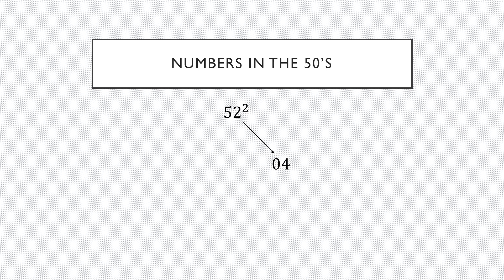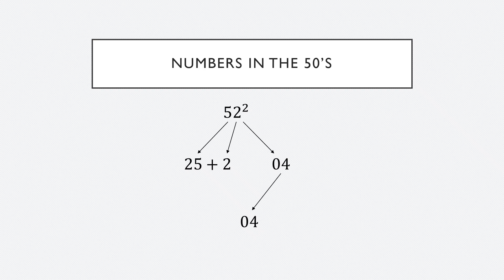Now, take the first digit and square it. So, 5 squared is 25. The next thing we'll do is add the last digit to the 25. So, I'm going to add 2 to 25. The 04 now forms the last two digits of the final answer. And 25 plus 2 is 27. So, 52 squared is 2704.